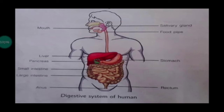After the mouth, salivary glands mix with the food and take it to the food pipe, which leads to the stomach. From the stomach, food goes into the small intestine, which helps digest it. The remaining undigested food goes to the large intestine, then to the rectum, and finally out through the anus. The digested food passes from the small intestine into the blood.